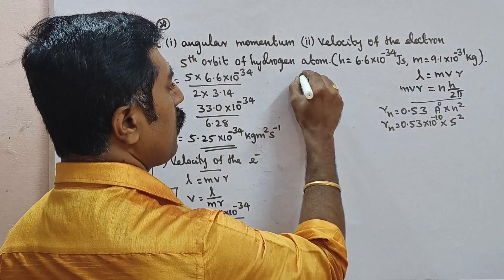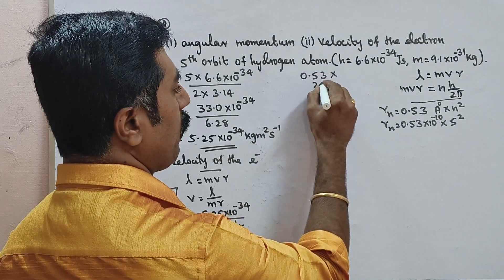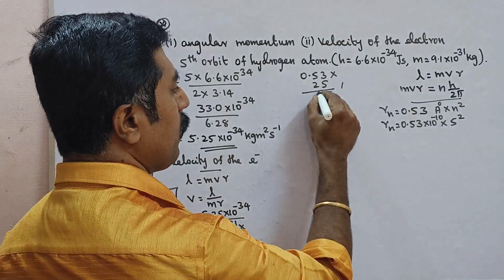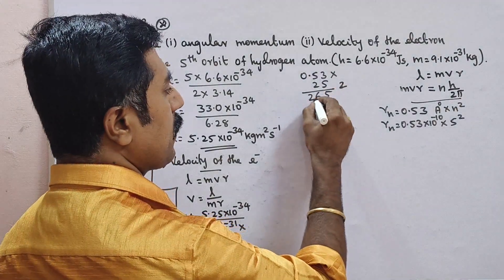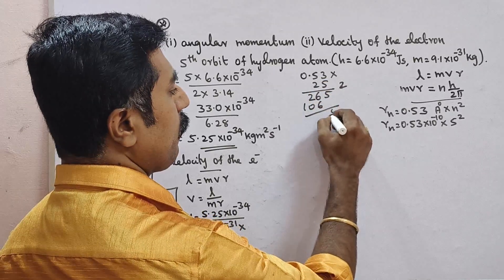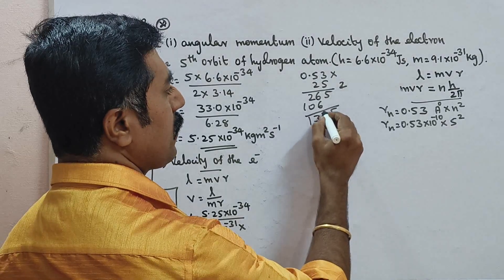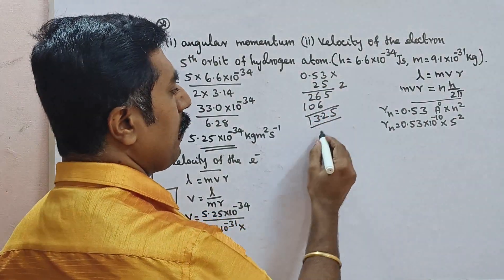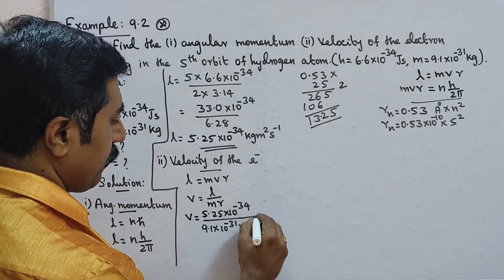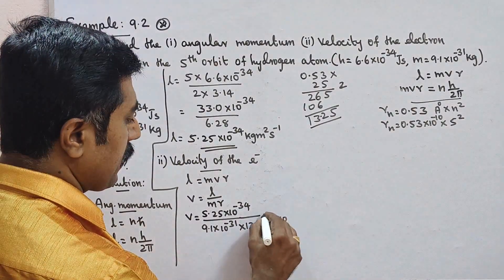N squared is 5 squared equals 25. So R equals 0.53×10⁻¹⁰ into 25. Calculating: 0.53×25 equals 13.25. Therefore R equals 13.25×10⁻¹⁰ meters.